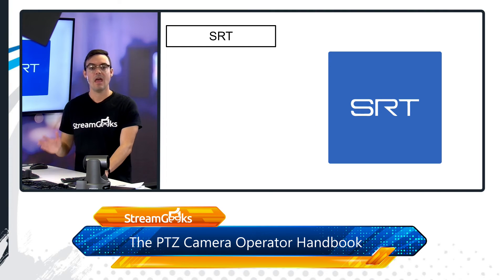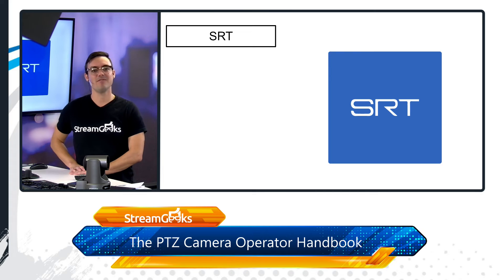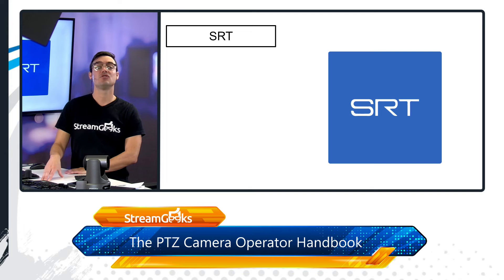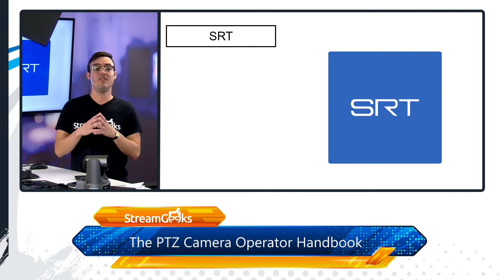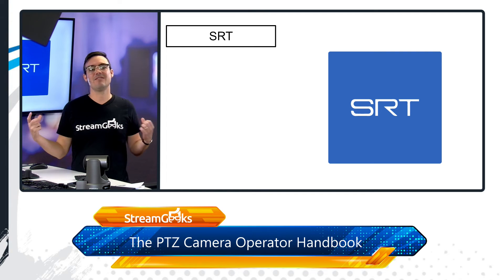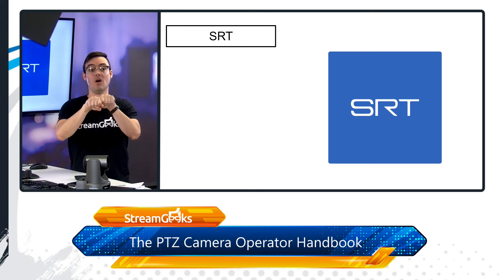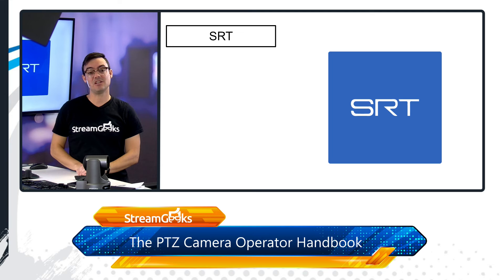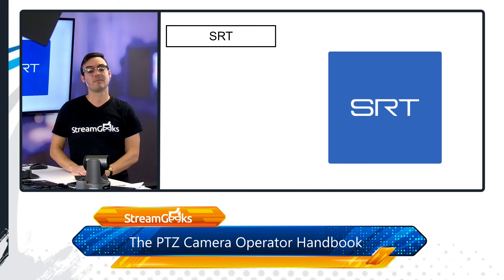SRT — Secure Reliable Transport — is another more advanced innovative feature in many PTZ cameras. Originally designed by Haivision, it's a well-supported video transport protocol that allows you to send video over the public internet and wide area network, sending it anywhere in the world in a reliable and secure fashion. It has great tools for error correction and we'll cover it in more detail in an upcoming video.